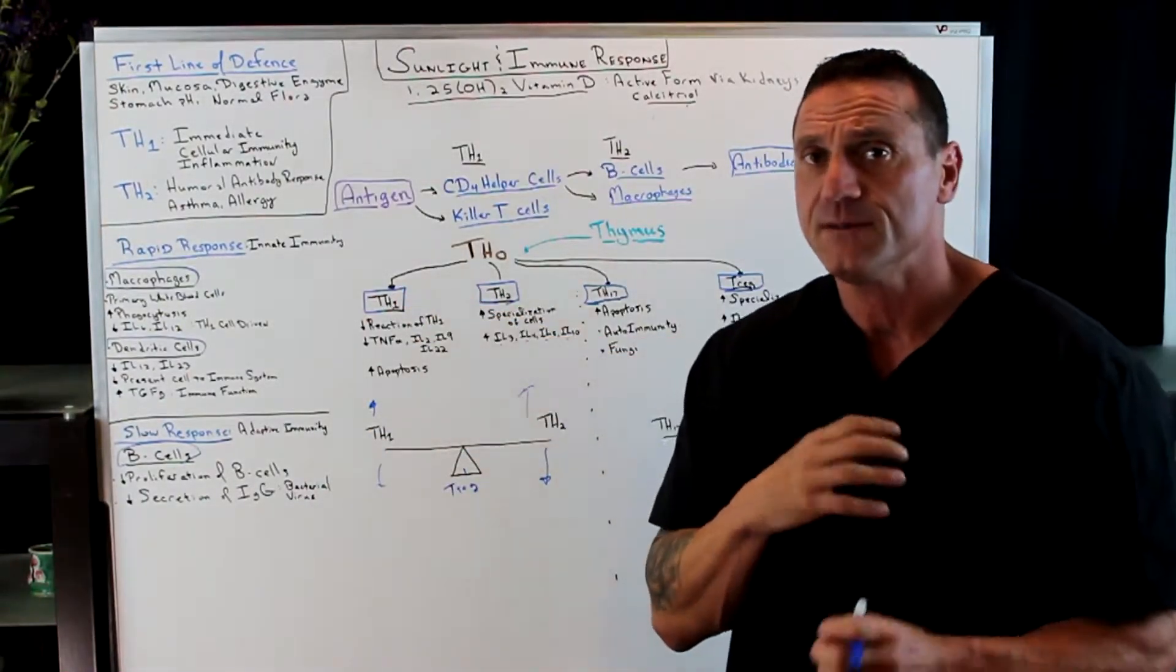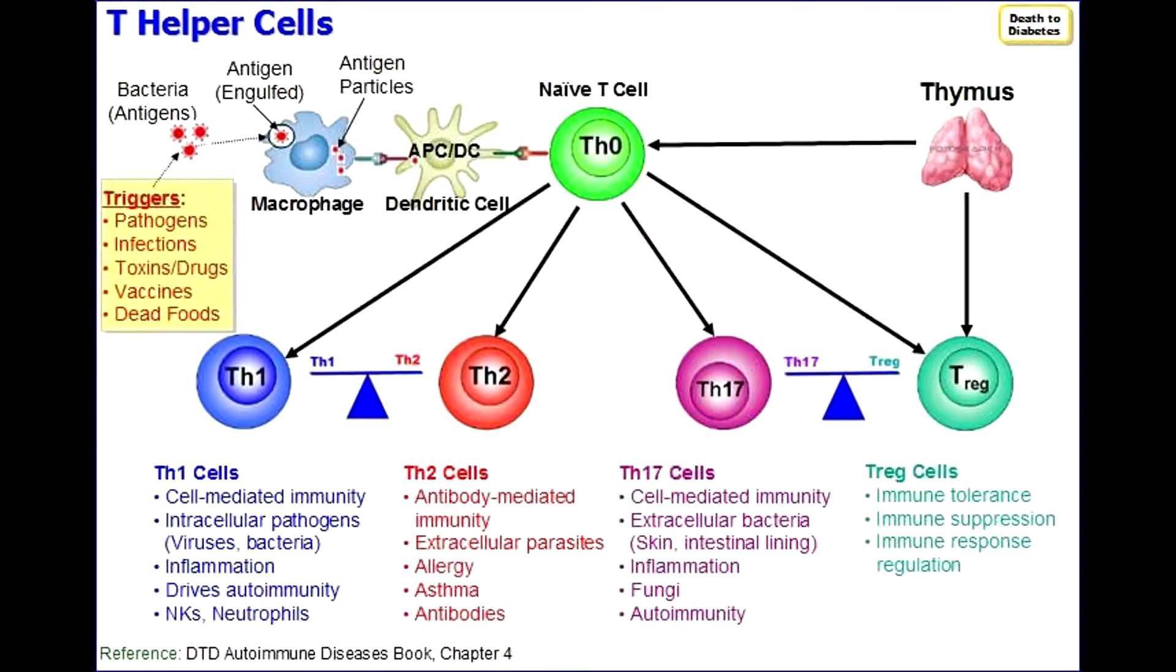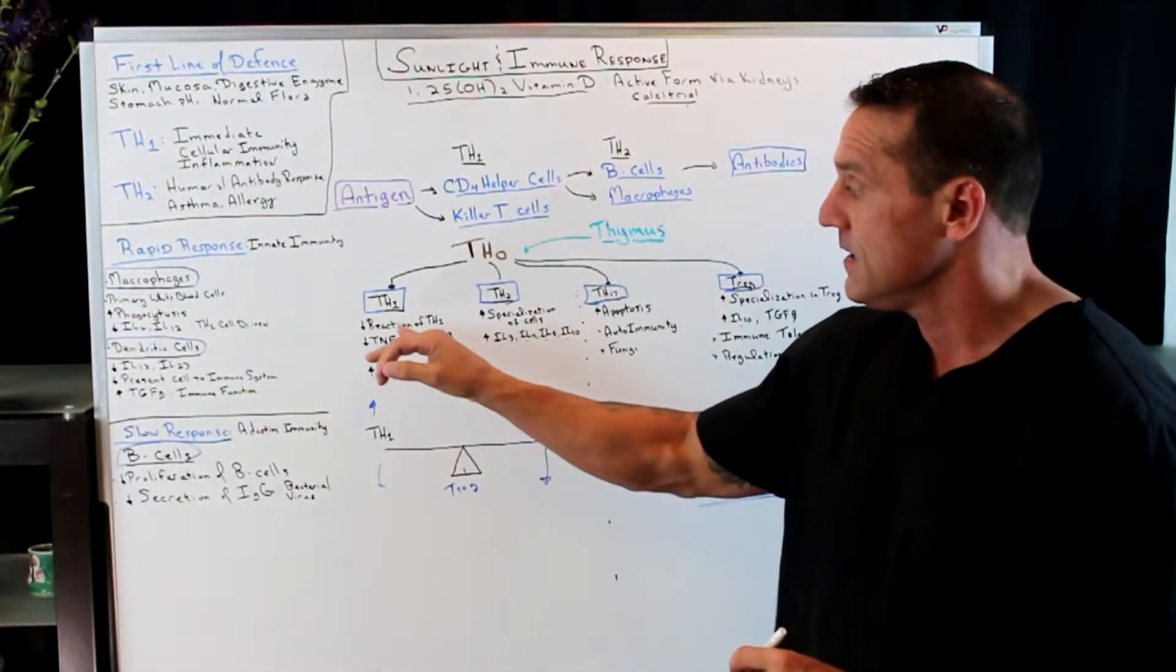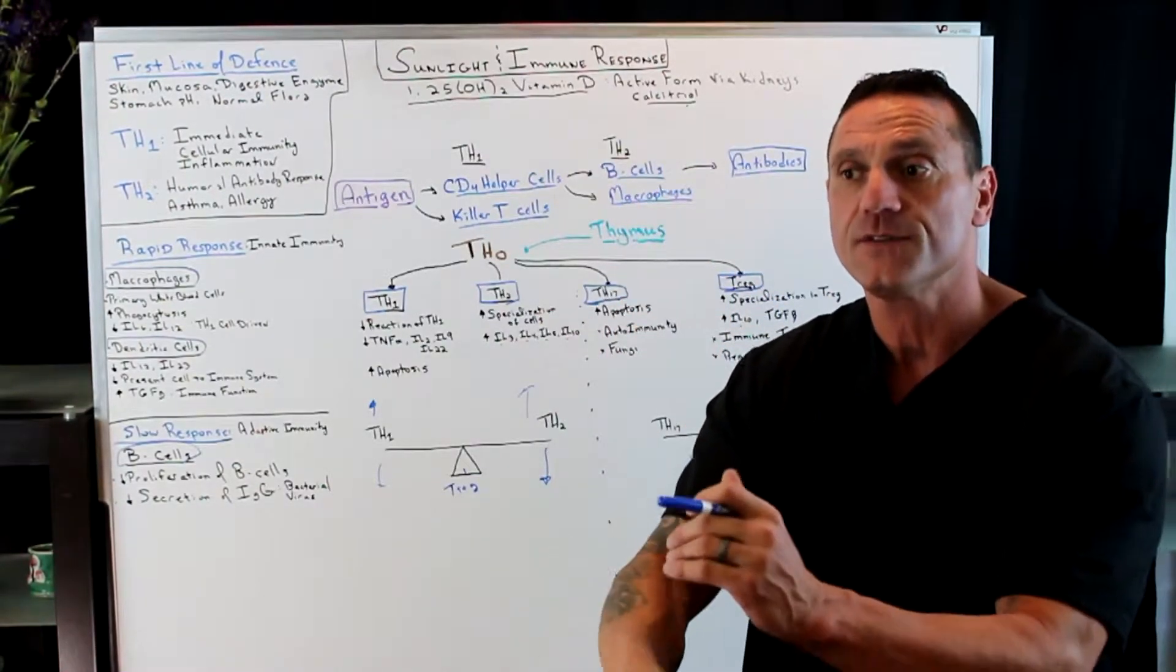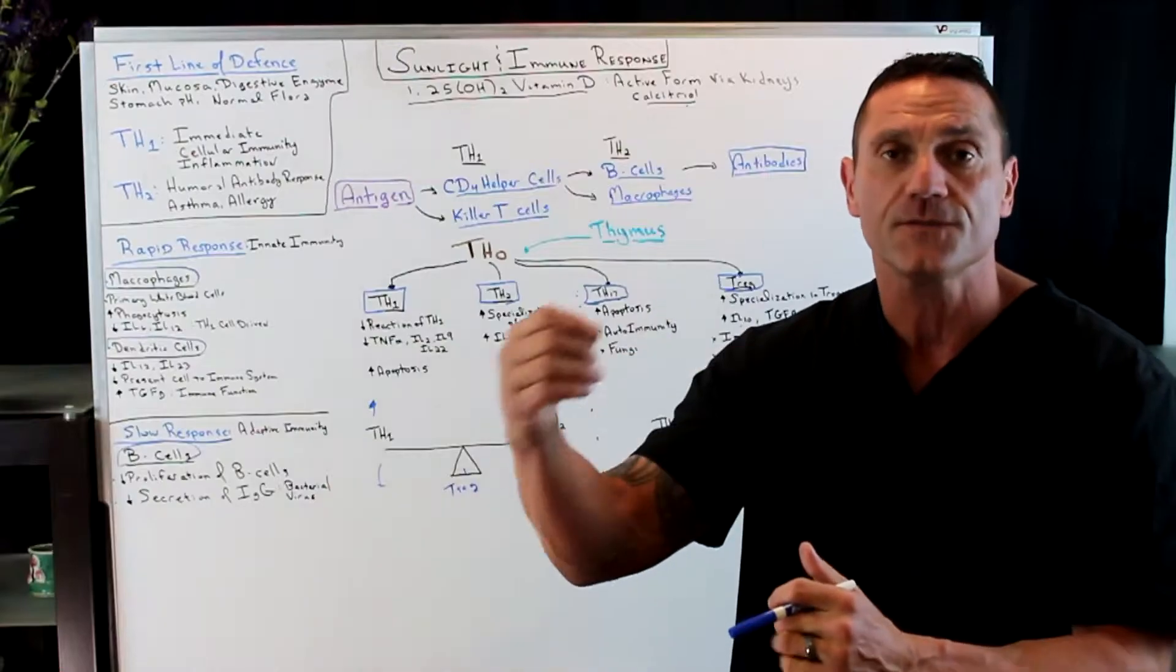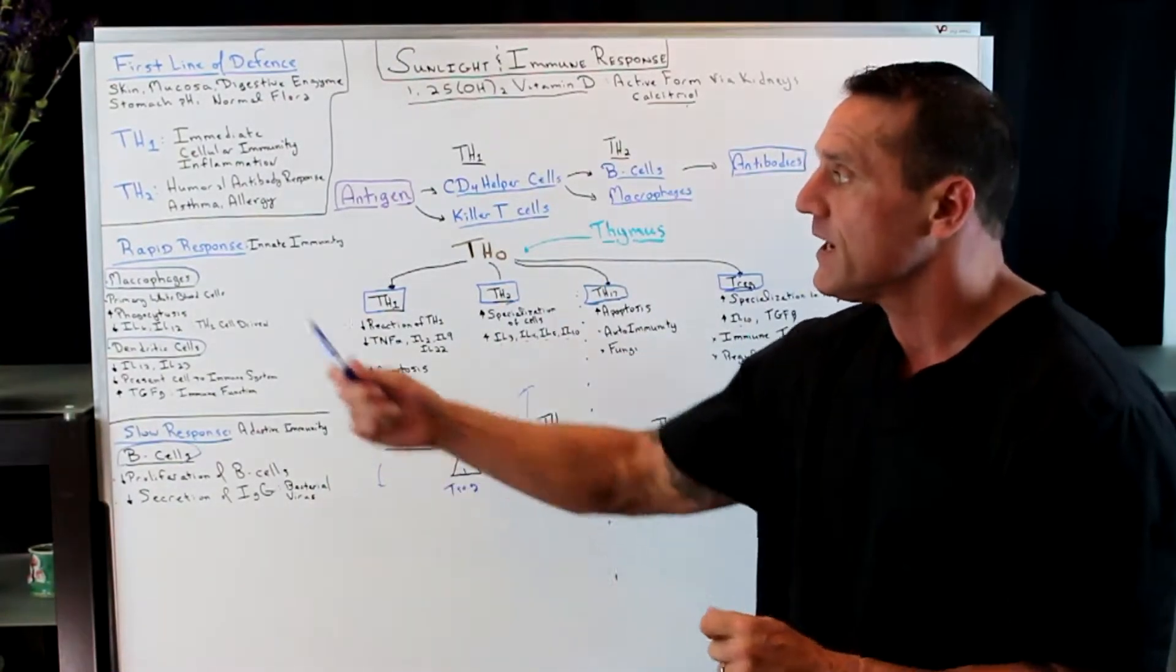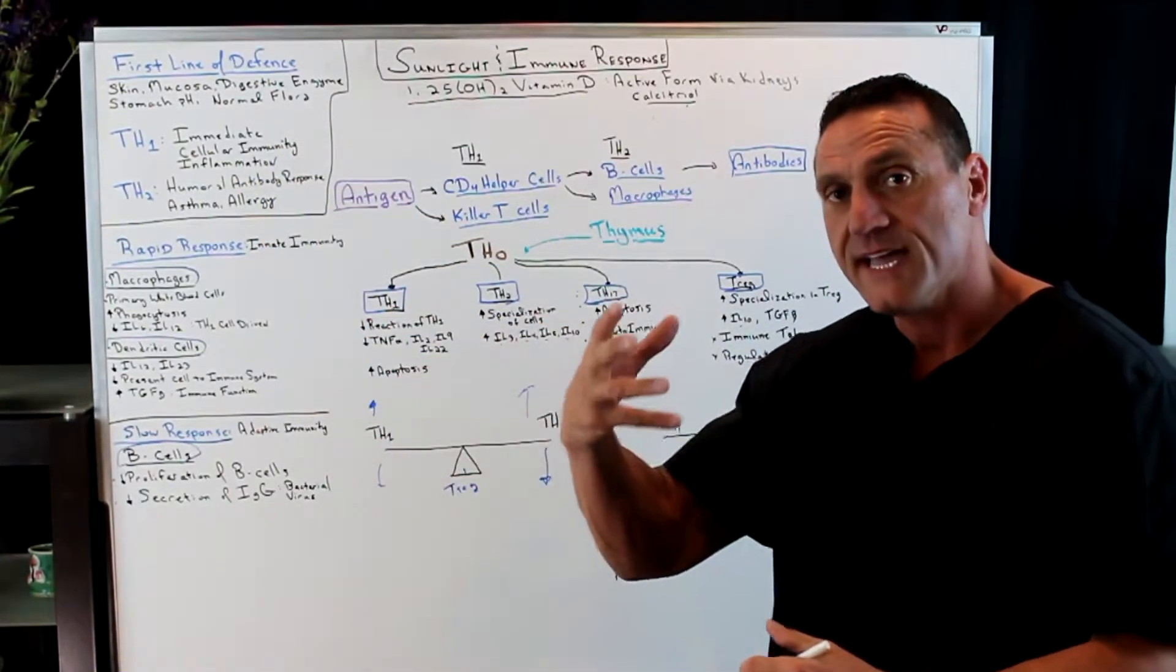So you have the thymus gland that produces the Th1 response. The Th1 response, this is your first responders. This is the immediate, this is the inflammation. So what sunlight does, because you want to balance between the Th1 and the Th2 response, it lowers. It's good for you. So it lowers the reaction of those first responders. You don't want those first responders always, always, always attacking. This is why you always get sick.